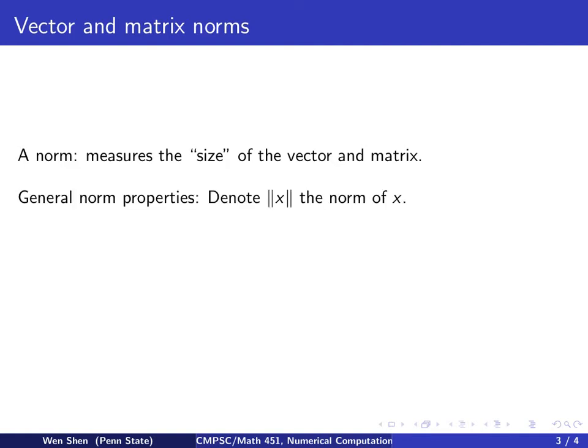For some definition to qualify as a norm, it must satisfy the following properties. Let the triple straight line around x denote the norm of x. First, the norm of x will be always non-negative, so it's bigger than or equal to 0, where the equal sign holds if and only if your x is a zero element. For example, if it's a vector, then x contains all zeros as its entries.